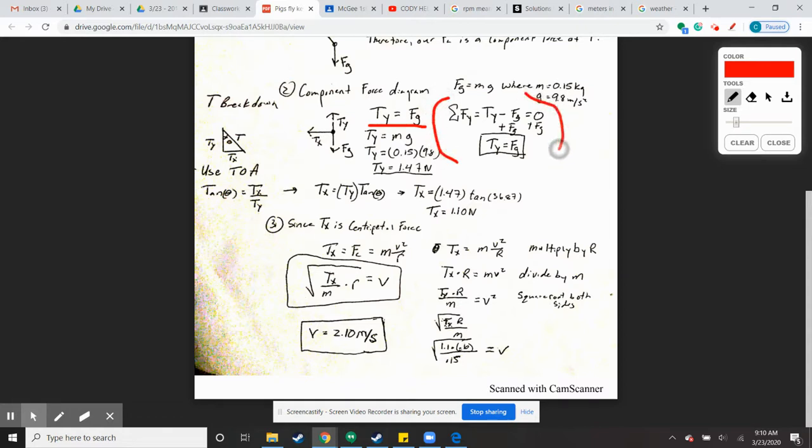I broke it down right here. You have the sum of the forces in the y direction equals Ty minus Fg equals zero. I added Fg to both sides, and sure enough, Ty equals Fg, just like we stated.